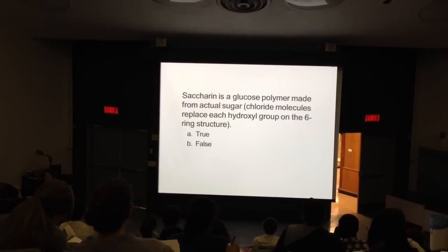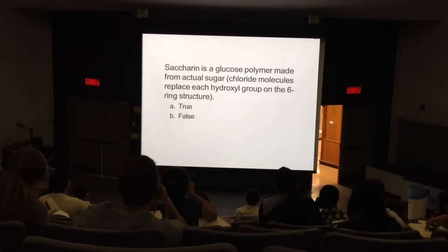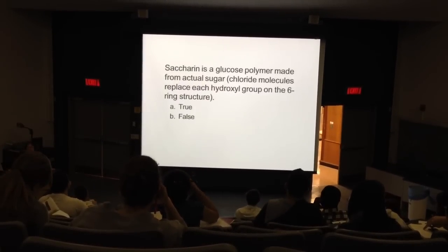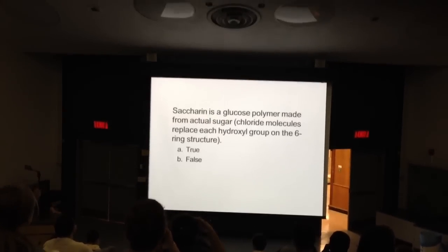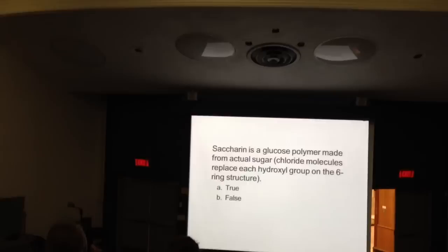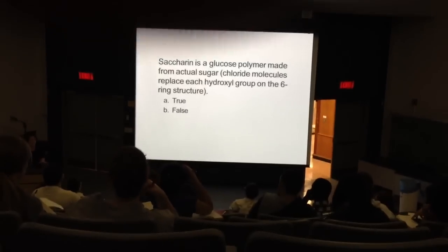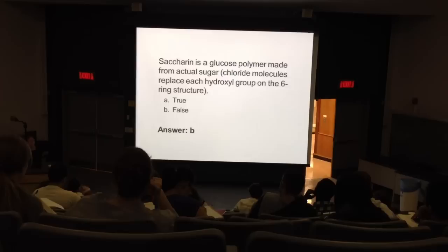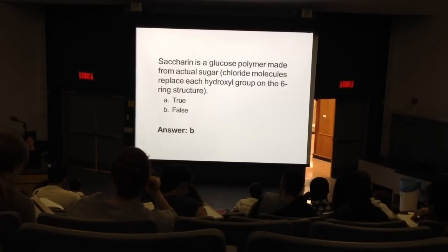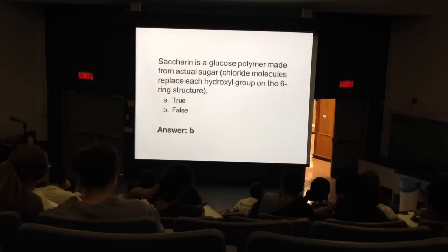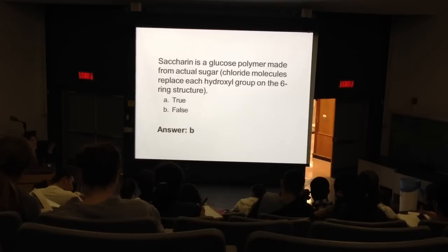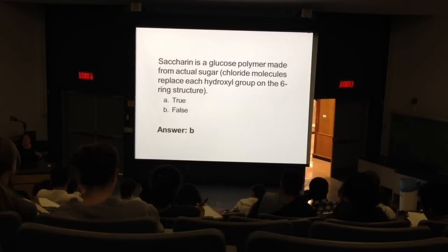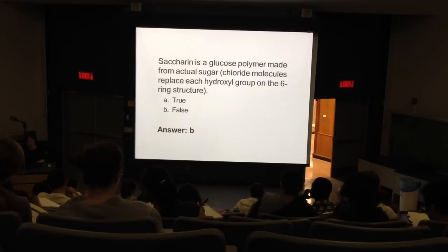Sucralose is a glucose polymer made from actual sugar, but chloride molecules replace the hydroxyl groups — this is a core carbon restructure. Saccharin is totally artificial, zero calories per gram. And remember, it has to have a warning label that it could cause cancer, but it's made it back on the market. Saccharin was not the first one to get off the market, and the sugar substitutes could cause cancer.